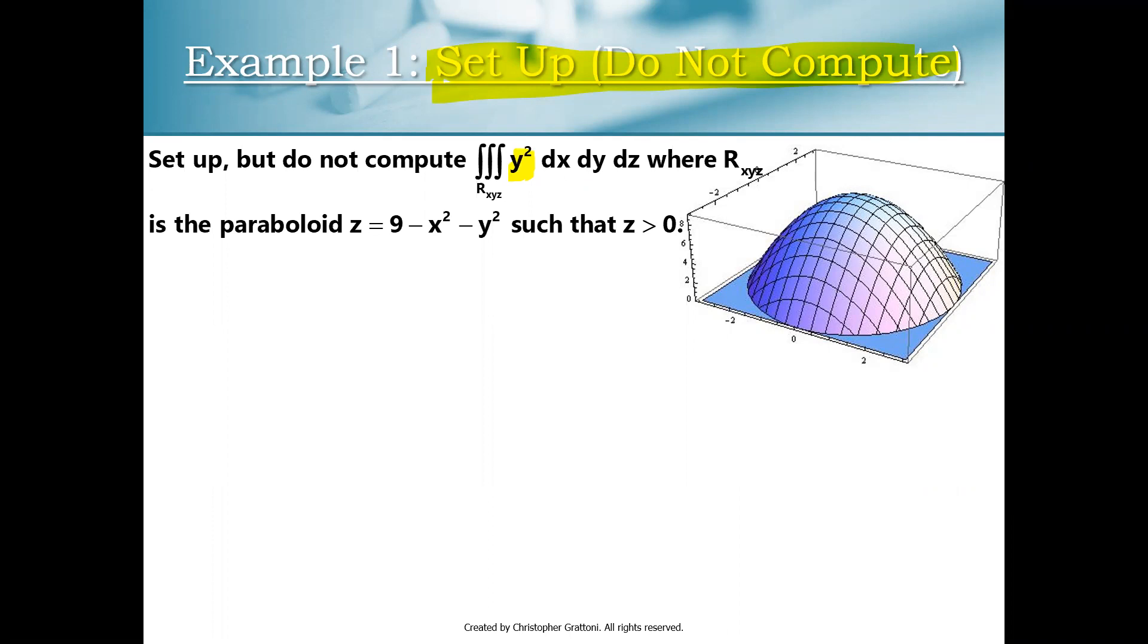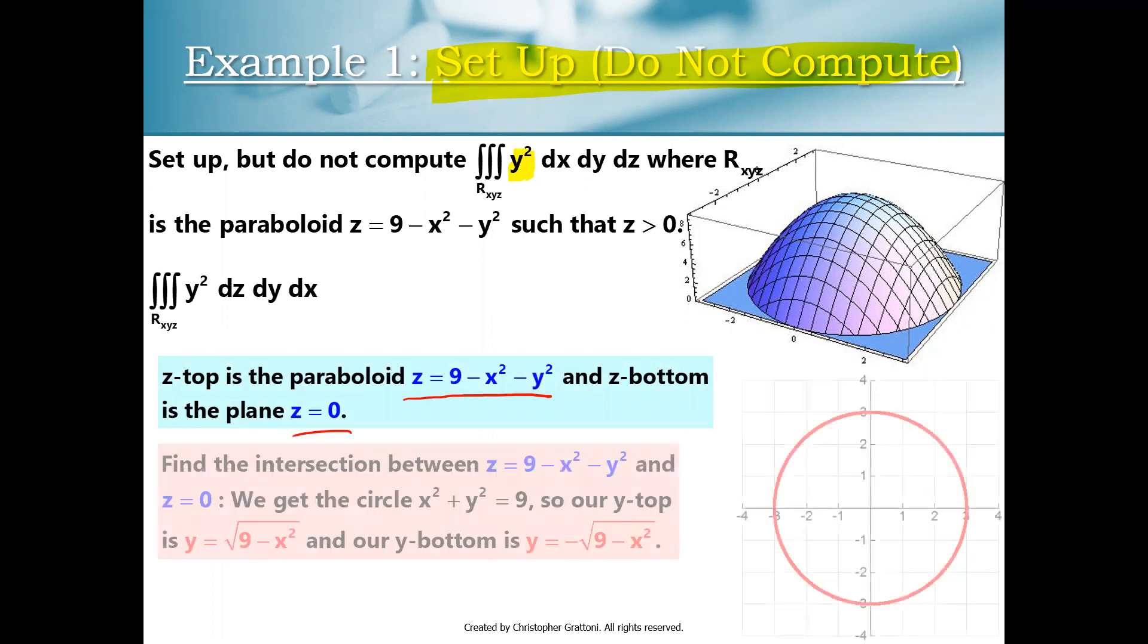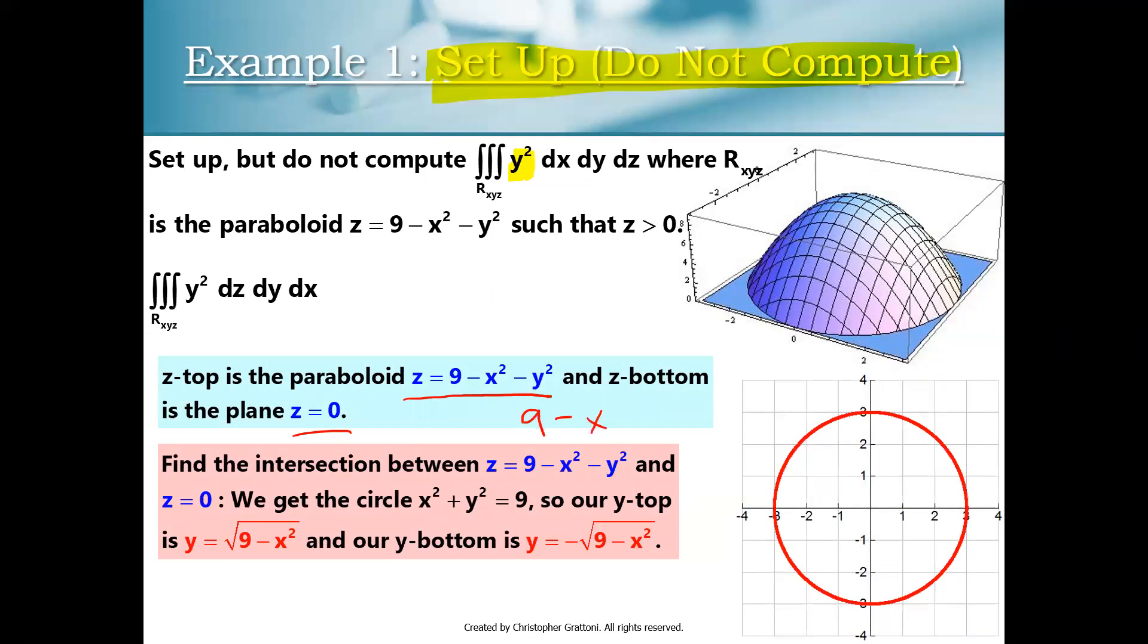We're not going to do a change of variables to start with because it's fairly easy to say, I know what my z top and my z bottom is. My z top is 9 minus x squared minus y squared. My z bottom is z equals 0. I can easily set those equal to each other. So if 9 minus x squared minus y squared is set equal to 0, I can turn that into the circle x squared plus y squared is equal to 9.